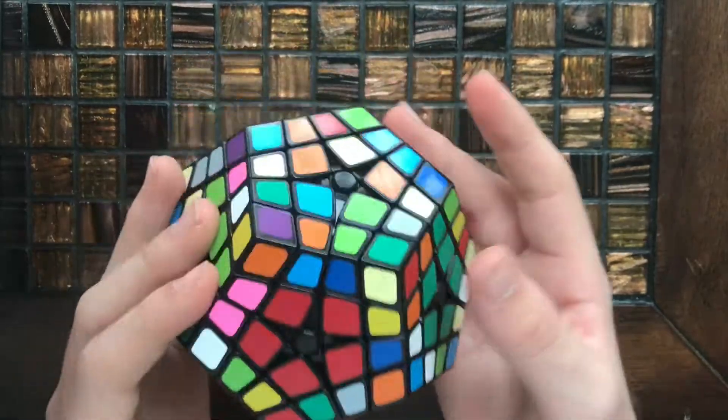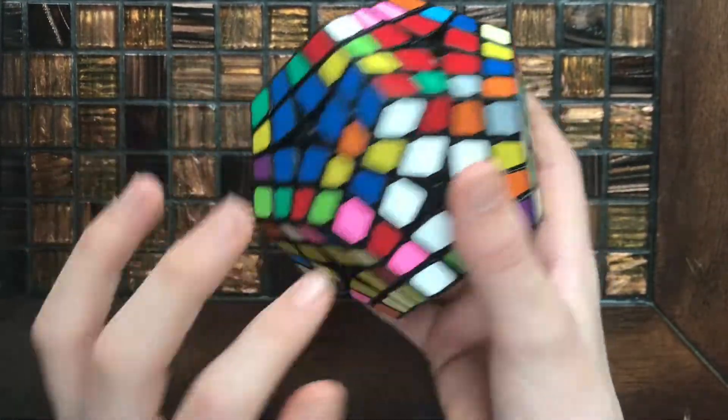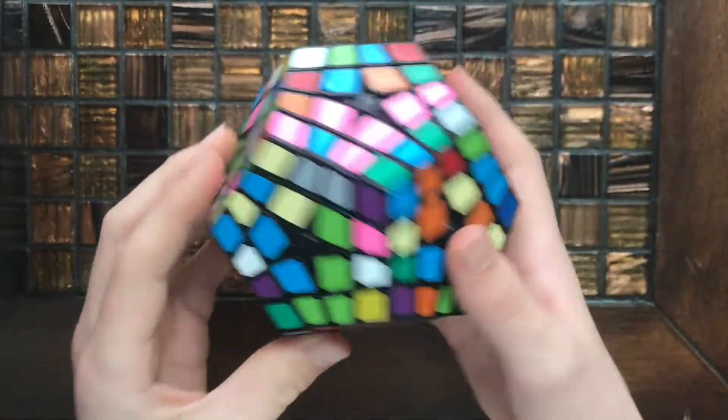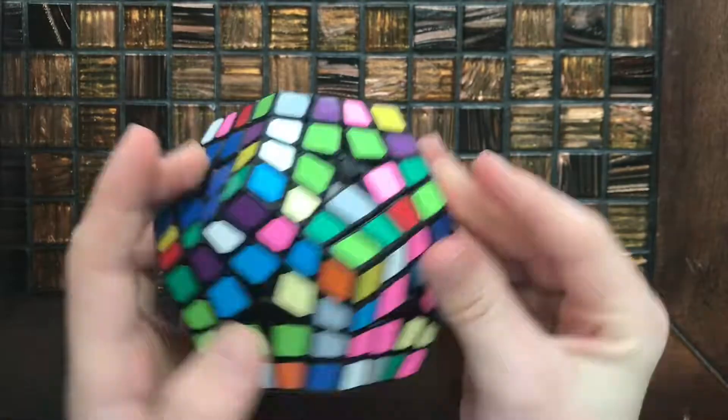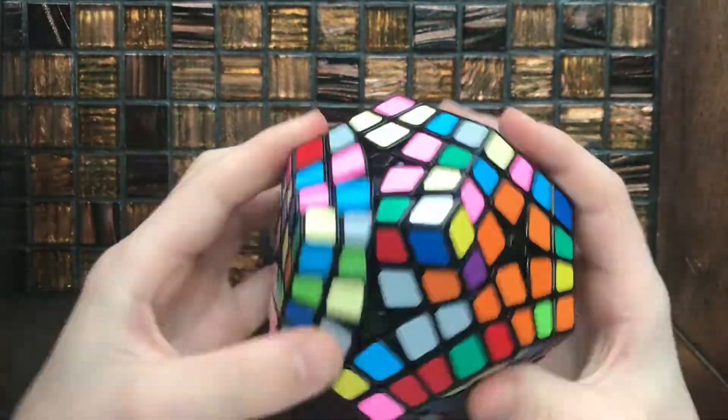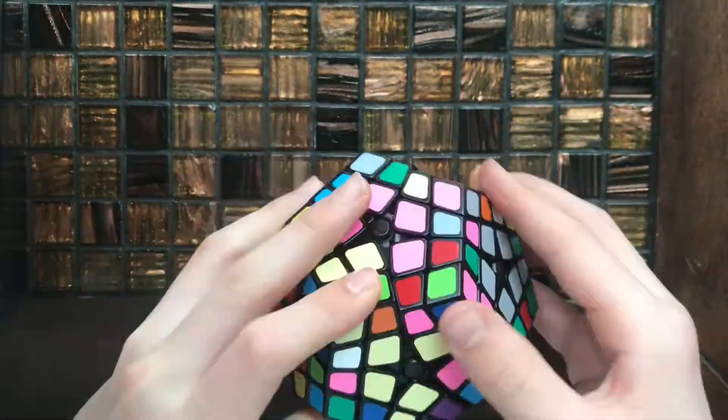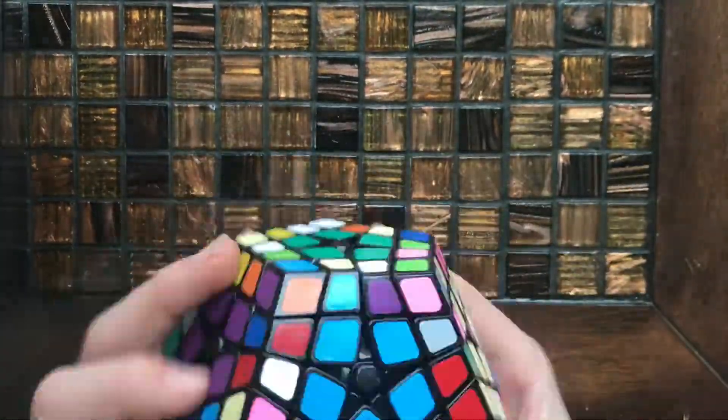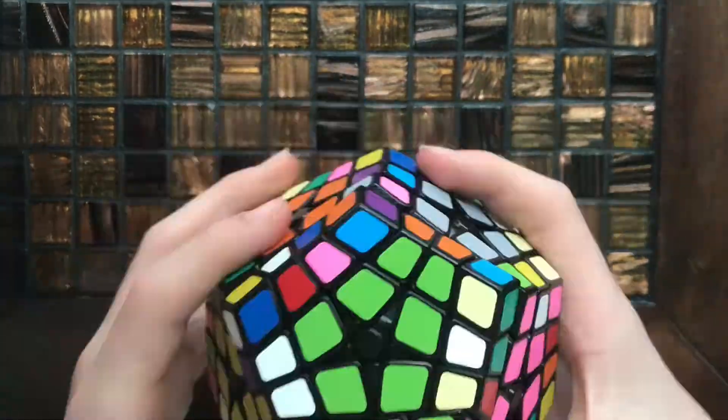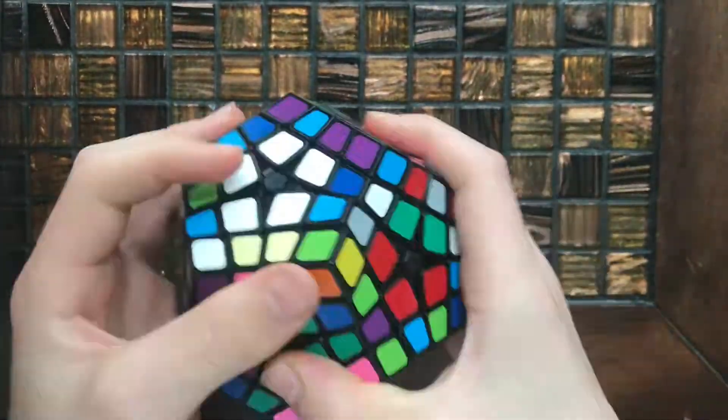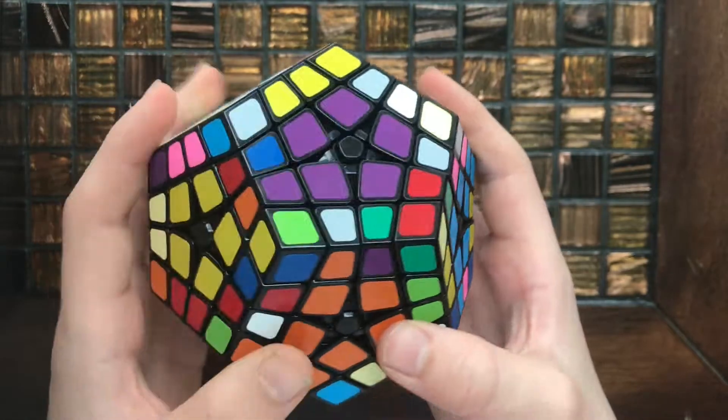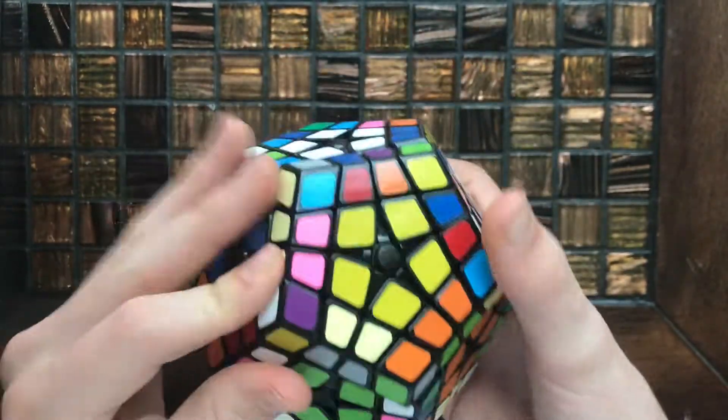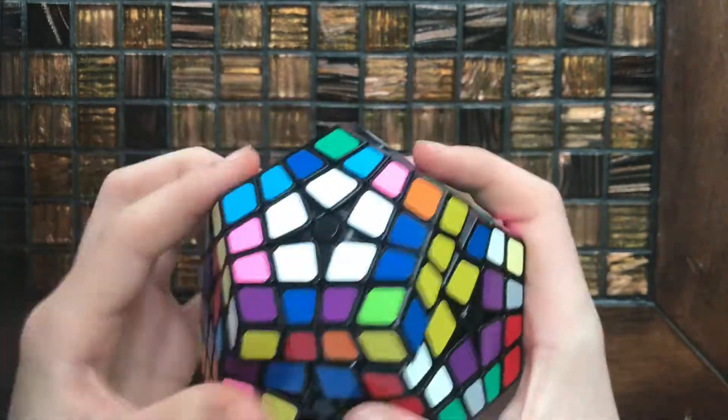Okay, so we have all of these first six centers done, now on to these last ones. Okay, so we got all of those 12 centers in and I have a few edges in already, and so now I guess I just need to finish up the edge pairing.